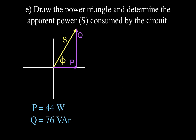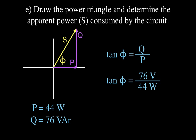We can also confirm the phase angle using the power values. Using TOA — tangent equals opposite over adjacent — tangent of the phase angle equals Q over P: 76 VAR divided by 44 watts. Taking the inverse tangent gives 60 degrees, confirming the same phase angle we found from the impedance triangle.